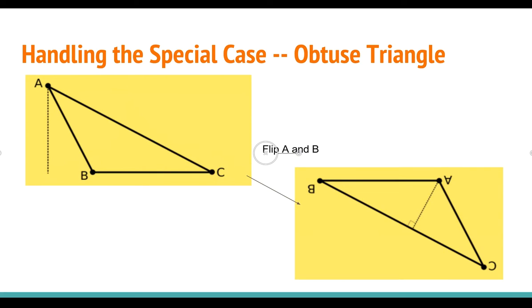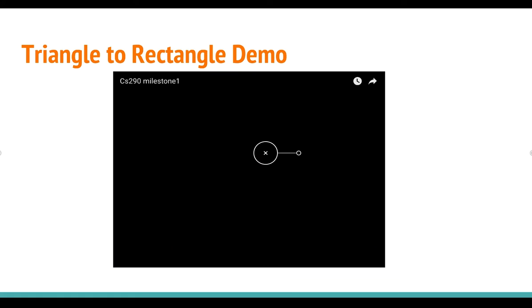There's one special case though. When the triangle is an obtuse triangle, we simply take our B as our starting point instead of A, and this is easily solved. Now I'll show you a small demo.